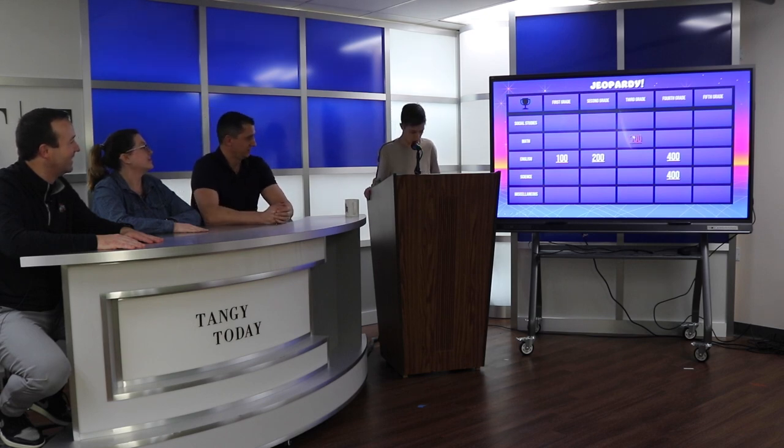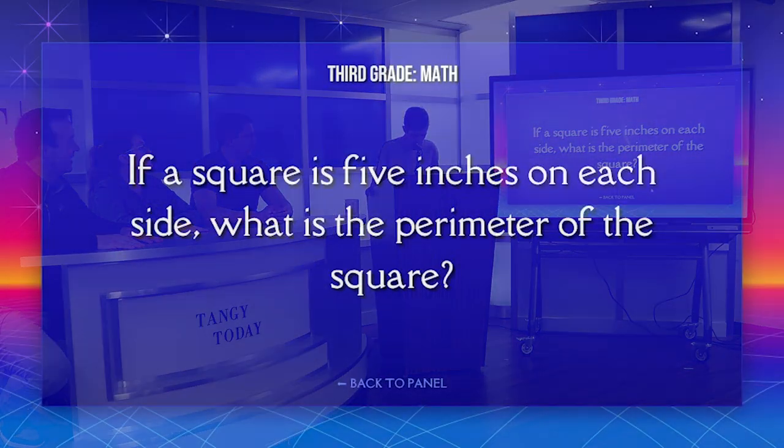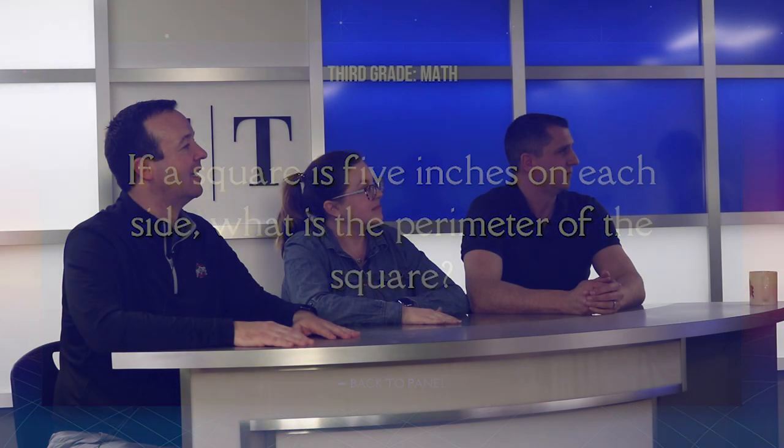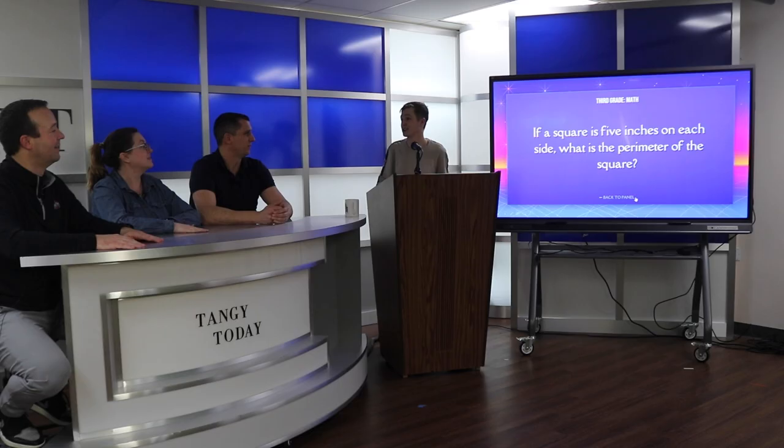Math 300 — the last math. If a square is five inches on each side, what is the perimeter of the square? 20. That is correct.